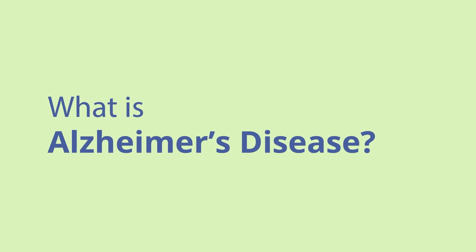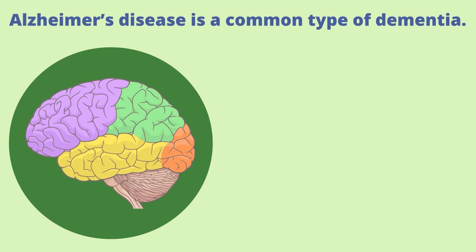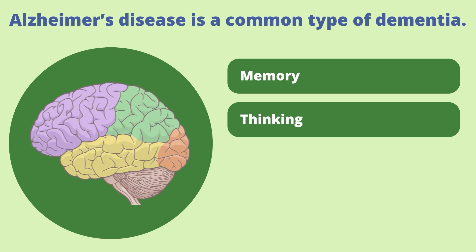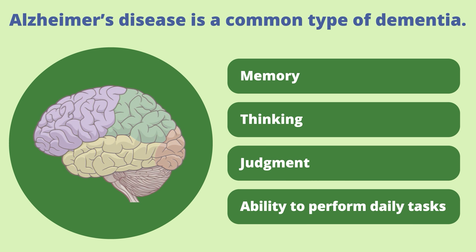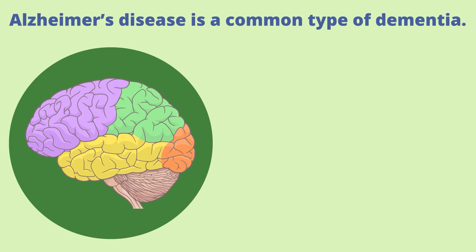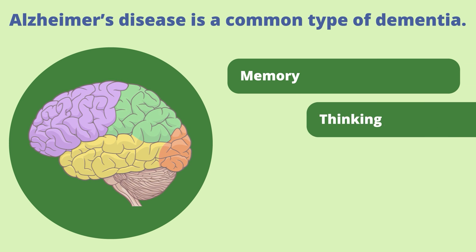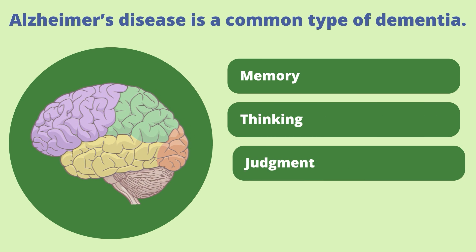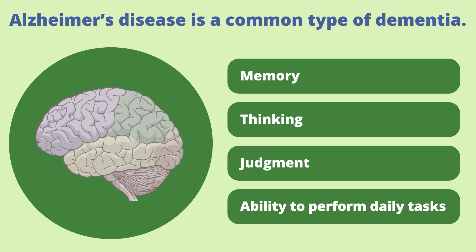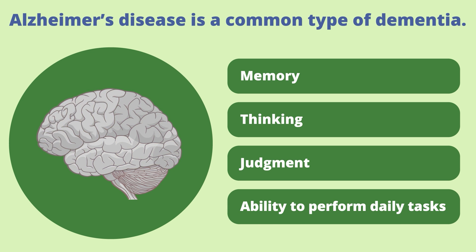What is Alzheimer's disease? Alzheimer's disease is a brain disorder that slowly destroys a person's ability to remember things, think clearly, use good judgment, and eventually carry out daily tasks. It is a common type of dementia.